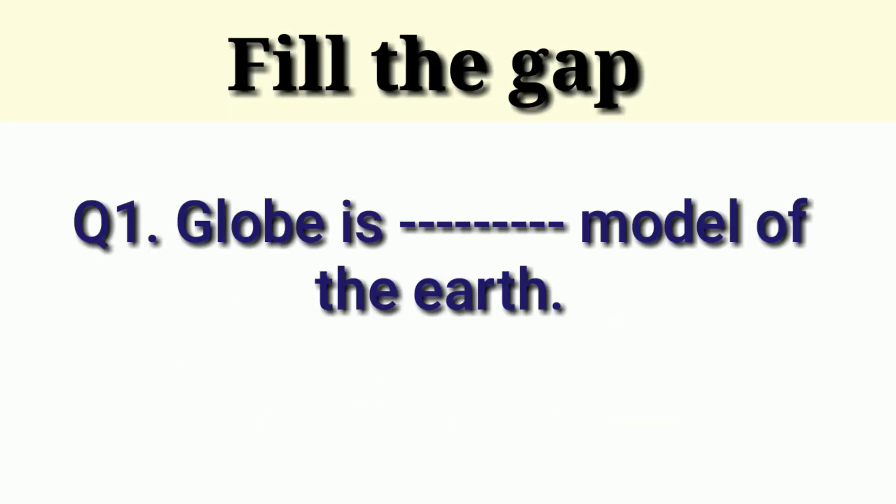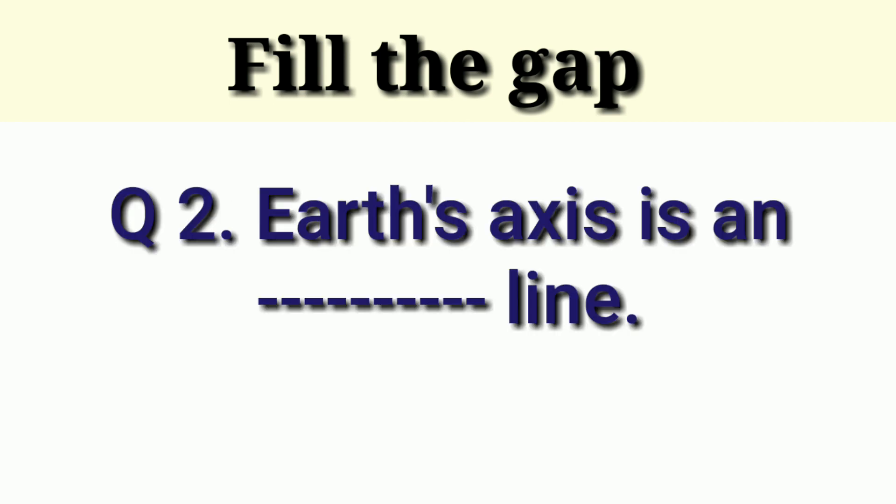First question is globe is dash model of the earth. Answer is true. Globe is true model of earth. Next question is earth's axis is an dash line. Answer is imaginary line.